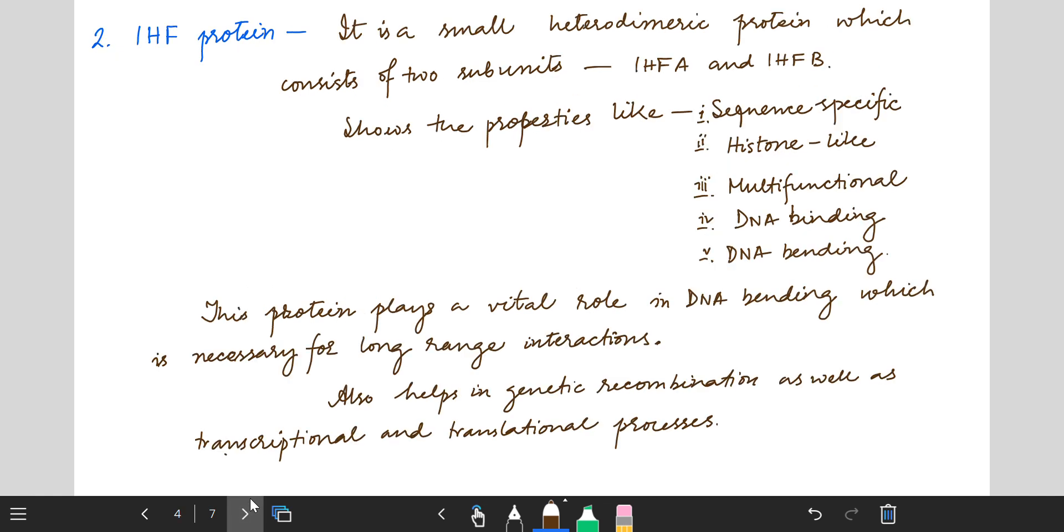IHF protein represents integration host factor. This protein when it binds with DNA induces a large bend up to 180 degrees. It is a small heterodimeric protein consisting of two subunits IHFA and IHFB, and shows properties like sequence specific, histone-like, multifunctional, DNA binding and bending up to 180 degrees.